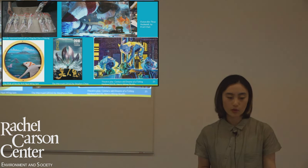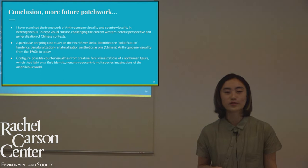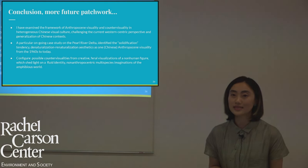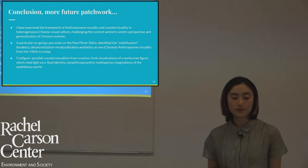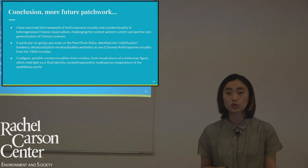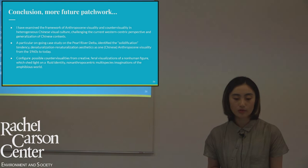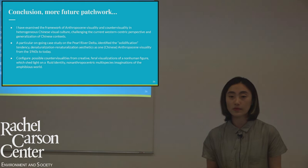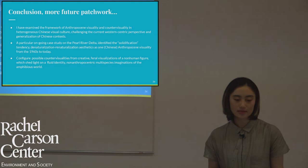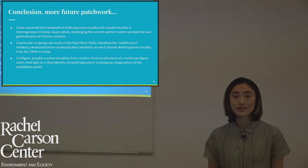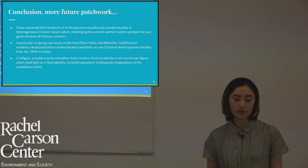To conclude this packed presentation: I have examined the framework of Anthropocene visuality and counter-visuality in heterogeneous Chinese visual culture, challenging current Western-centric perspectives and generalizations of Chinese texts. I presented a particular ongoing case study on the Pearl River Delta, identified the solidification tendency of natural water bodies, and the denaturalization and re-naturalization aesthetics as one Chinese Anthropocene visuality from the 1960s to today. I attempted to configure possible counter-visualities from creative feral visualizations of the non-human figure Lo Ting in Hong Kong creative arts, which lie on fluid identity, non-anthropocentric, multi-species imaginations of an amphibious world beyond borders and political constraints. As this research is still in its early stage, I envision more patchwork to thread different historical and spatial visual cases around the Delta. I very much appreciate your suggestions and comments. Thank you.